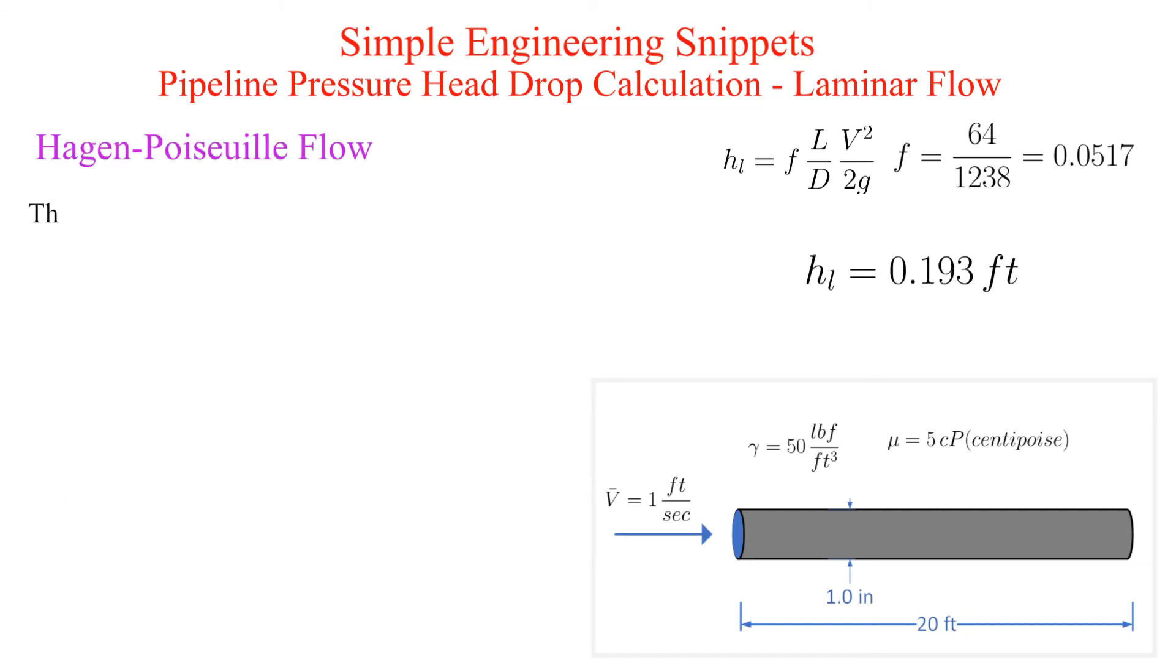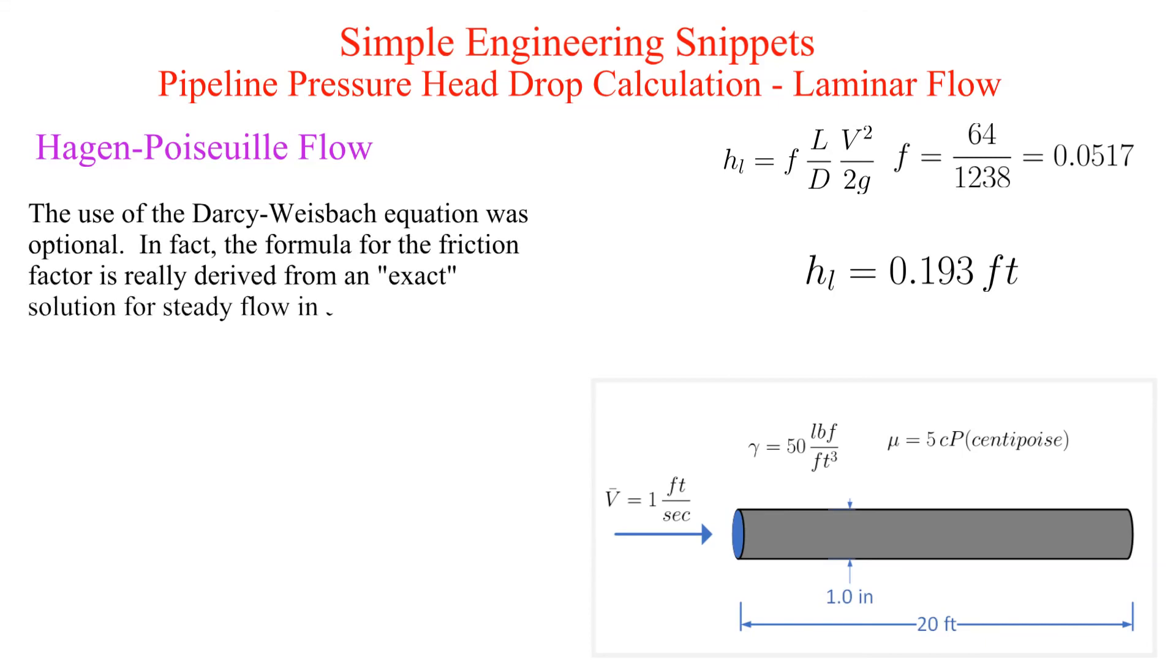Many of you may be wondering why we didn't just go straight to the equations for Hagen-Poiseuille flow. In fact we did. The definition of the friction factor equal to 64 divided by the Reynolds number is an extension of those flow equations.